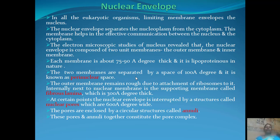Certain points of the nuclear envelope are interrupted by structures called nuclear pores. There is a gap in the nuclear envelope in the form of nuclear pores. The pores are enclosed by a circular structure called annulite. The pores and annulite together constitute the pore complex.